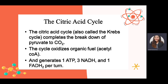The cycle oxidizes organic fuel — the acetyl-coenzyme A — and generates 1 ATP, 3 NADH, and 1 FADH2 per turn. The NADH and FADH2 produced here will be used later in the final stage of cellular respiration.